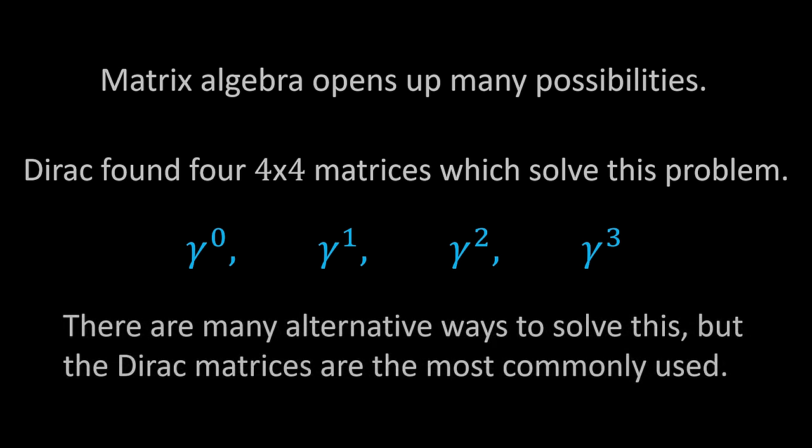That equals the square root of the four-momentum dotted with itself, which equals mc. So we've effectively taken the square root of the mass shell. There's a really concise way to write this using the Einstein summation convention: γ^μ p_μ = mc, where the repeated index μ runs from 0 to 3 and we sum over all those terms. This is the Dirac equation in momentum space — when you sum the gamma matrices times the four-momentum components you get the mass of the particle times the speed of light.